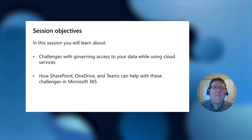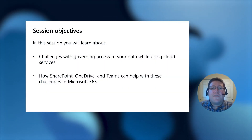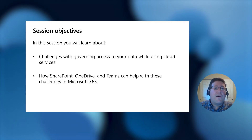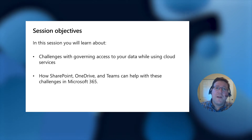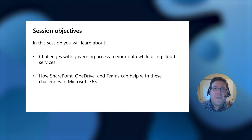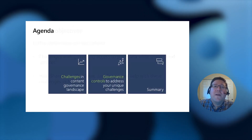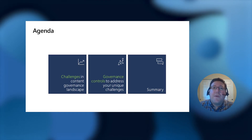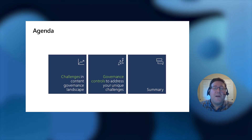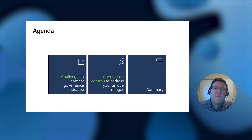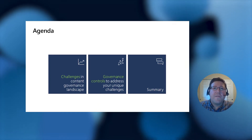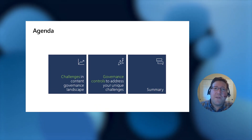In this session, you're going to learn about challenges governing access to your data in the Cloud, and how SharePoint, OneDrive, and Teams can help with those challenges by providing you some tools and capabilities that you can use. First, we're going to talk about the content governance landscape and how it looks like today, and governance controls available in Microsoft 365 to help address your unique challenges. Then we're going to sum things up and give you some links that you can follow up and look at for more information.